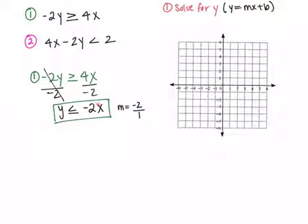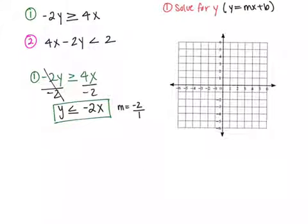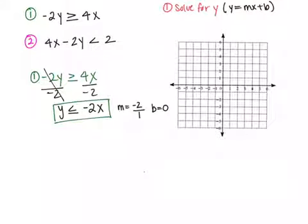But what is my intercept? I don't have a plus or minus b on this side. So if there isn't an intercept next to your equation, then by default the intercept is at 0. So my intercept is at 0. When I graph this, I want to start on my y-axis and plot my intercept at 0. Then since my slope is negative 2, I go down 2 and over 1 to the right.